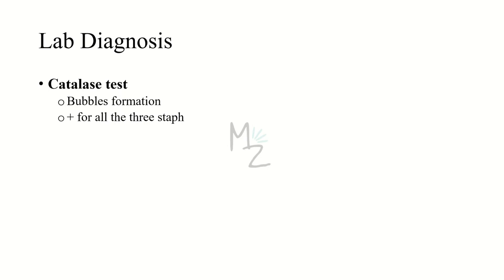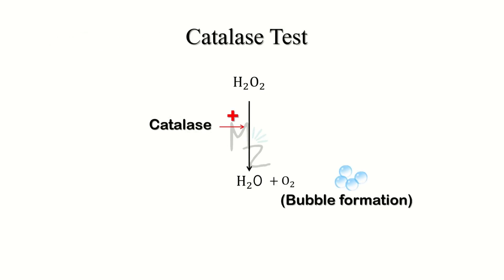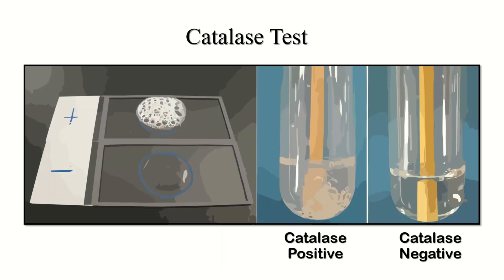We confirm the Gram stain findings with the catalase test by bubble formation. This test is positive for all three staph species. We take a petri dish, place the bacterium in it, then pour a solution of hydrogen peroxide. If the bacterium releases catalase enzyme, it converts the hydrogen peroxide into water and oxygen, and the oxygen forms bubbles — a positive result. Staph epidermidis is catalase positive, so bubbles will be formed. As you can see on the slide, the side showing bubbles is catalase positive and the side showing no bubbles is catalase negative.